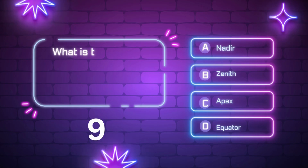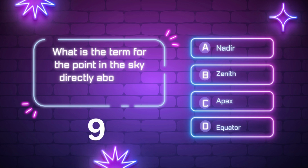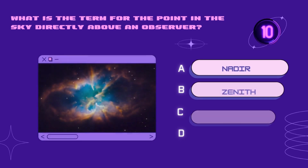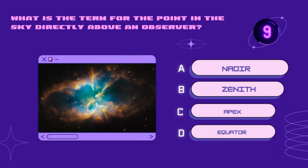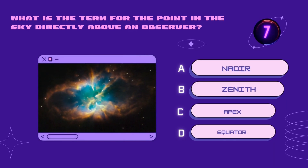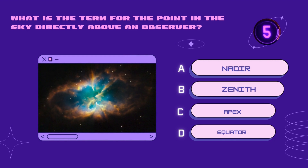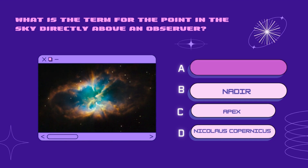What is the term for the point in the sky directly above an observer? Zenith, Nadir, Apex, Equator. Your time starts now. Right answer is Zenith.